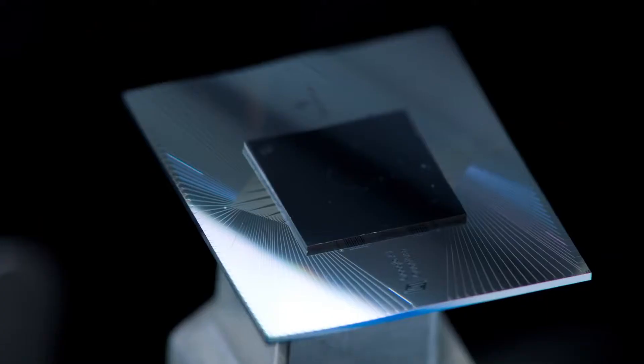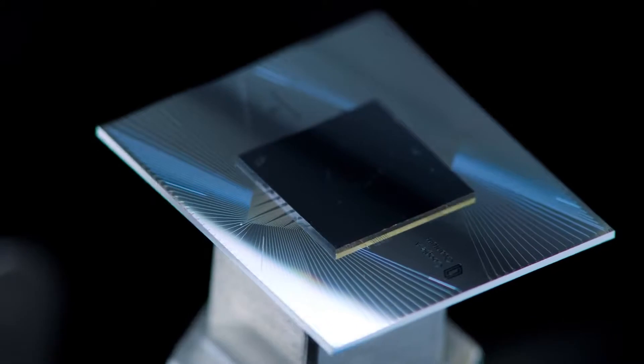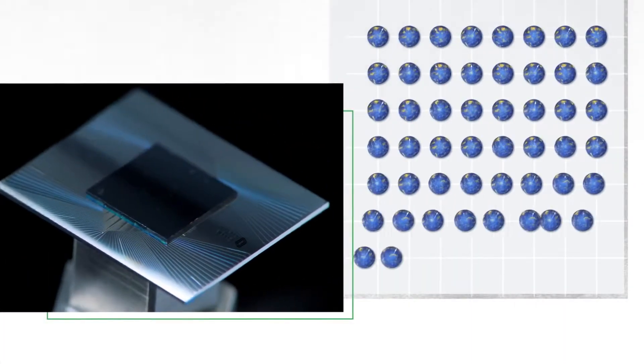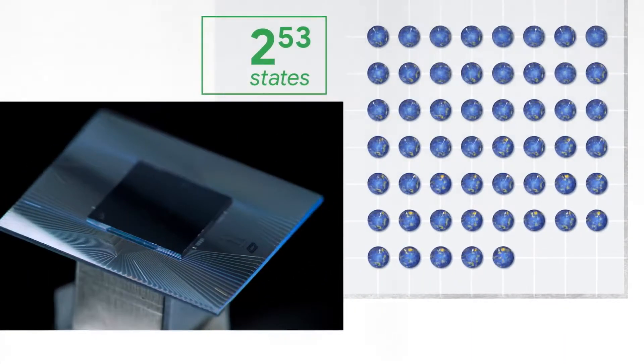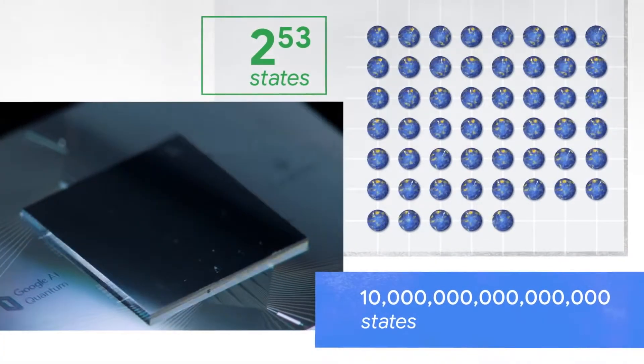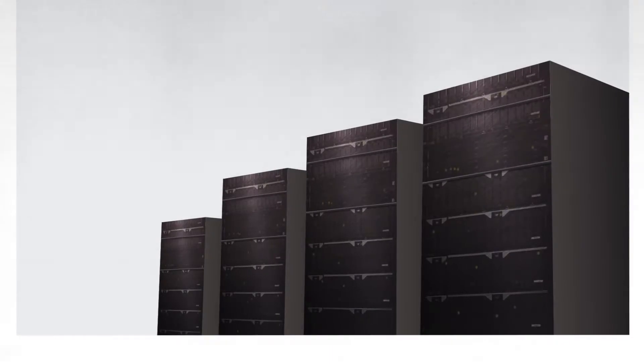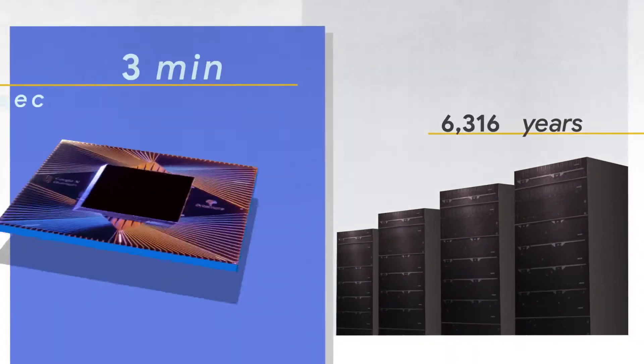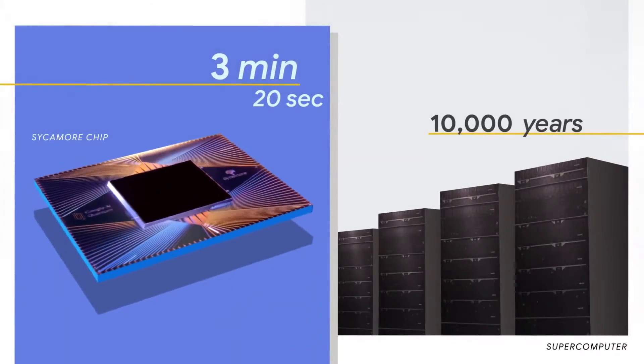The processor that achieved quantum supremacy is called the Sycamore processor. And it's parallel processing two to the fifty-three states, which is ten million billion, and thus that enormous amount of parallel processing is what gives it the power. When we run a small chunk of the computation against the largest supercomputer in the world, our estimate is that it will take thousands of years to complete the full computation.